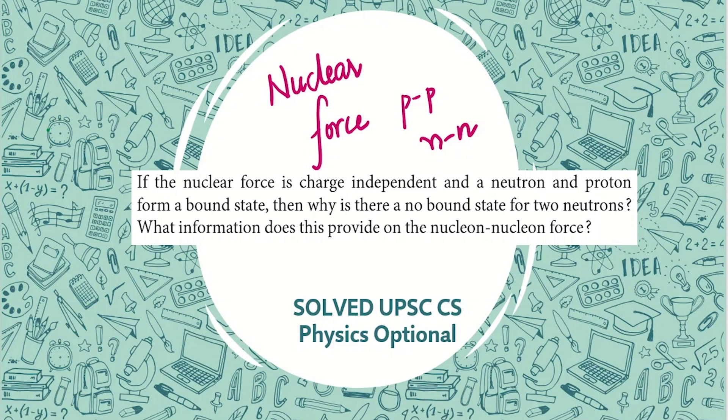In today's video, we'll solve this question from a previous year question paper on nuclear physics. The question asks: if the nuclear force is charge independent and a neutron and proton form a bound state, then why is there no bound state for two neutrons? What information does this provide on the nucleon-nucleon force?